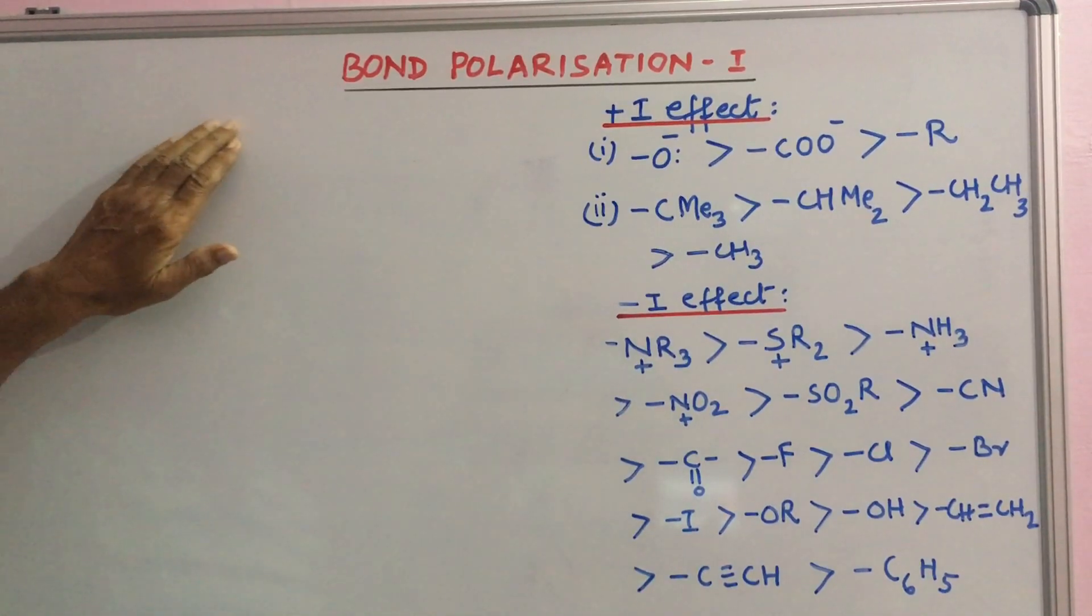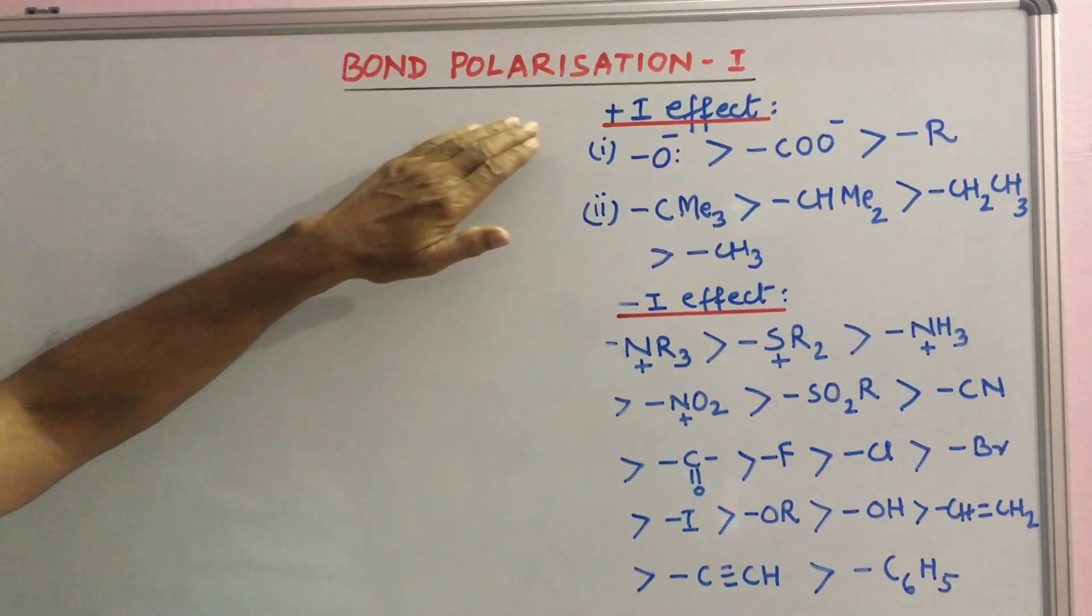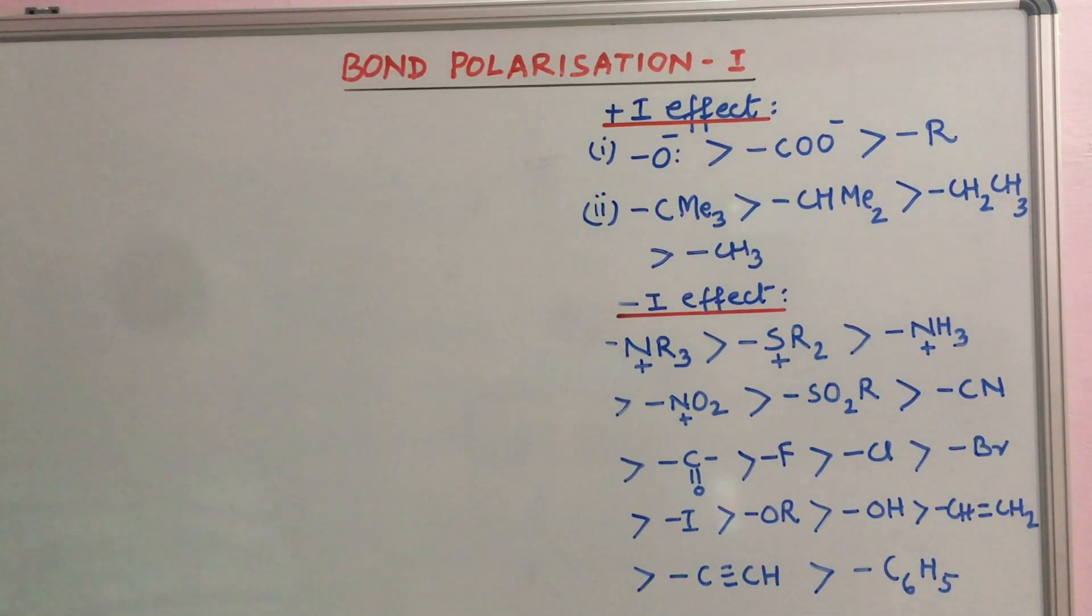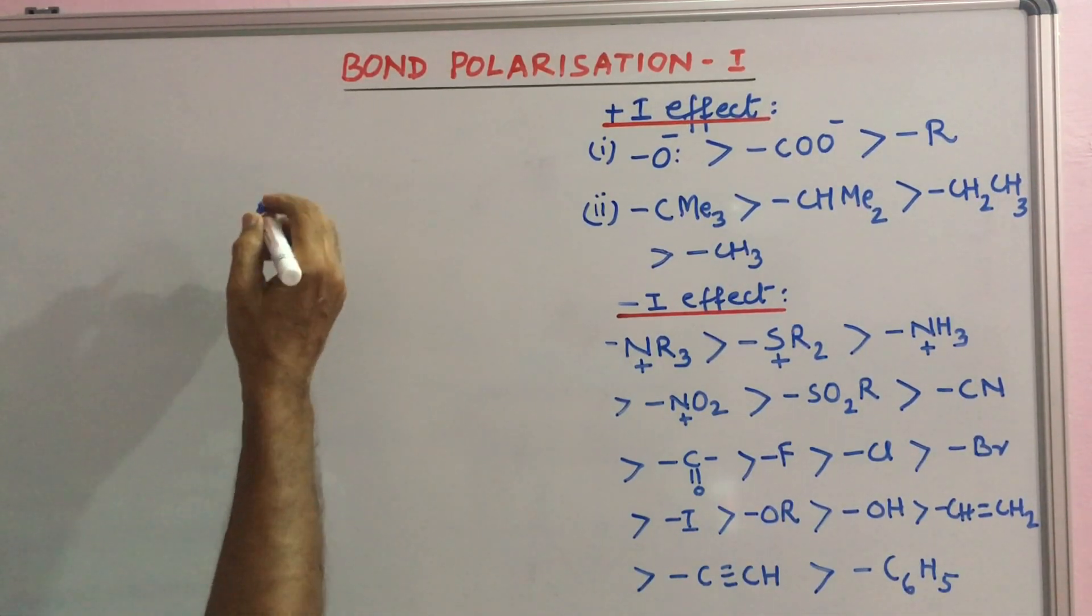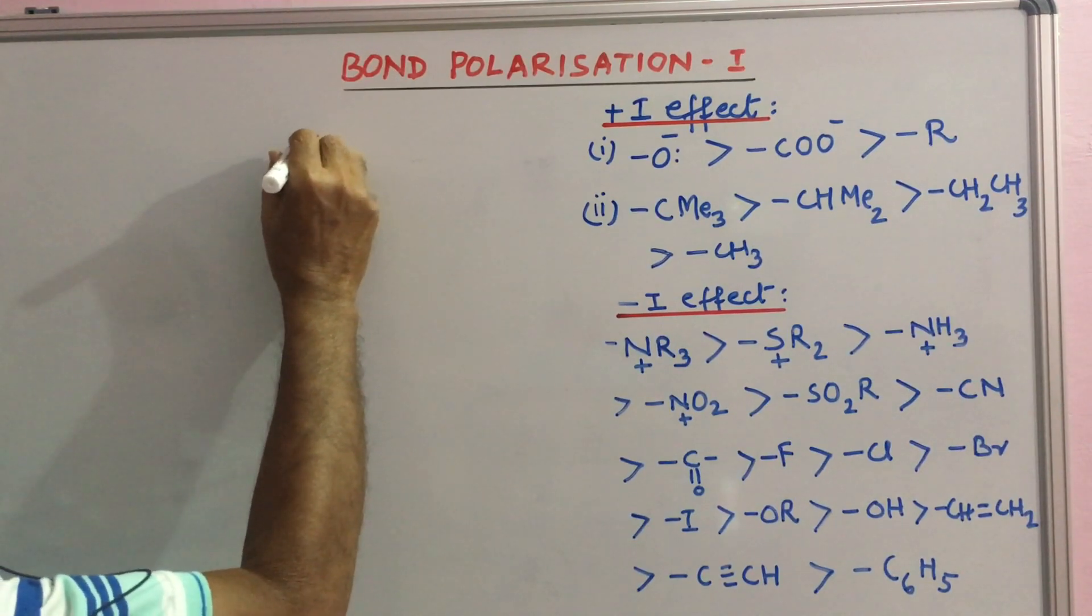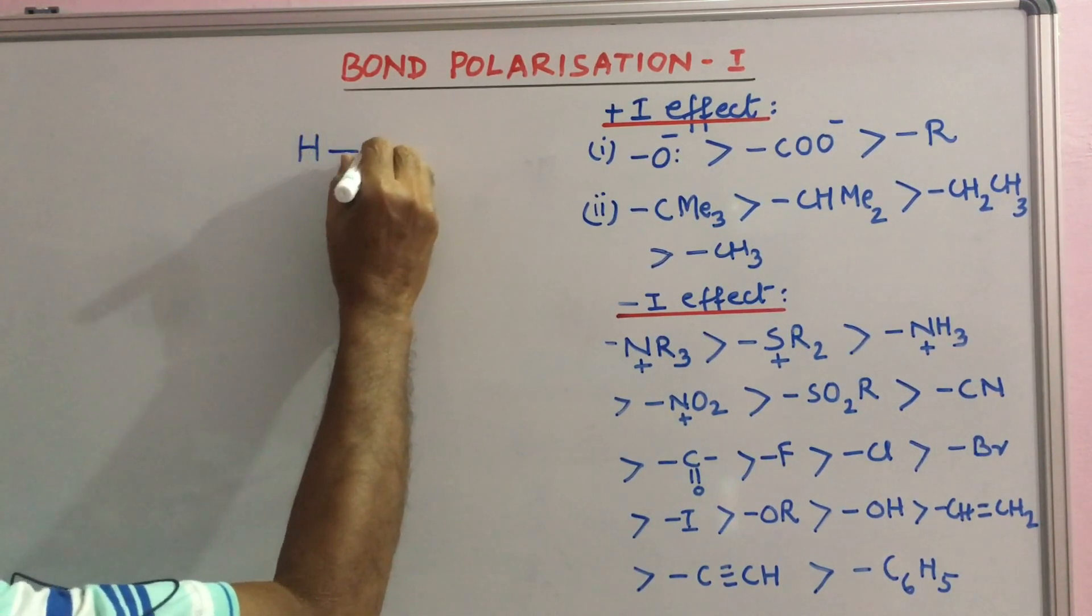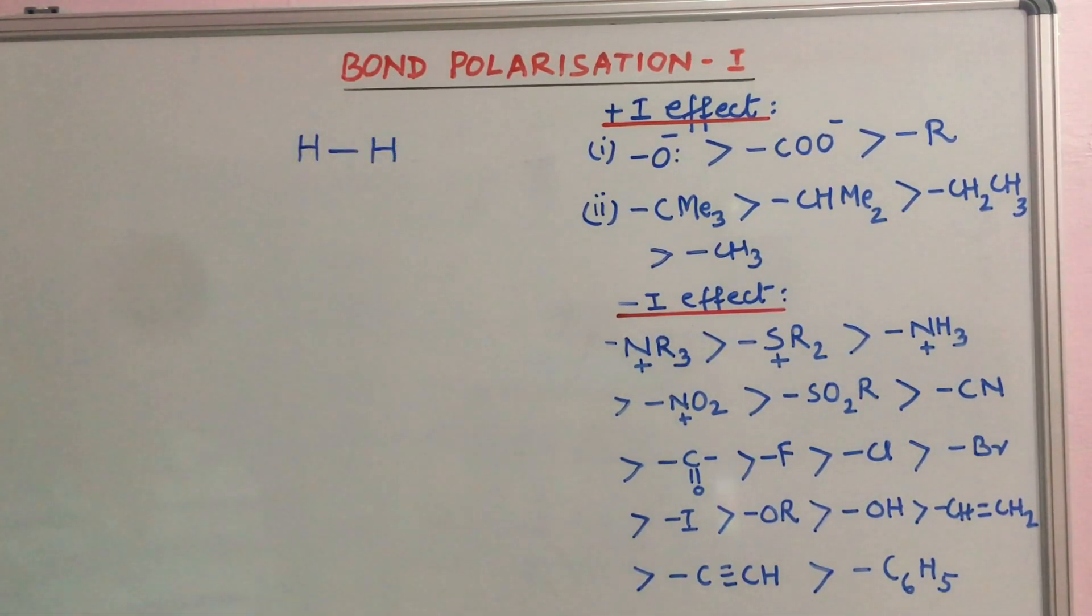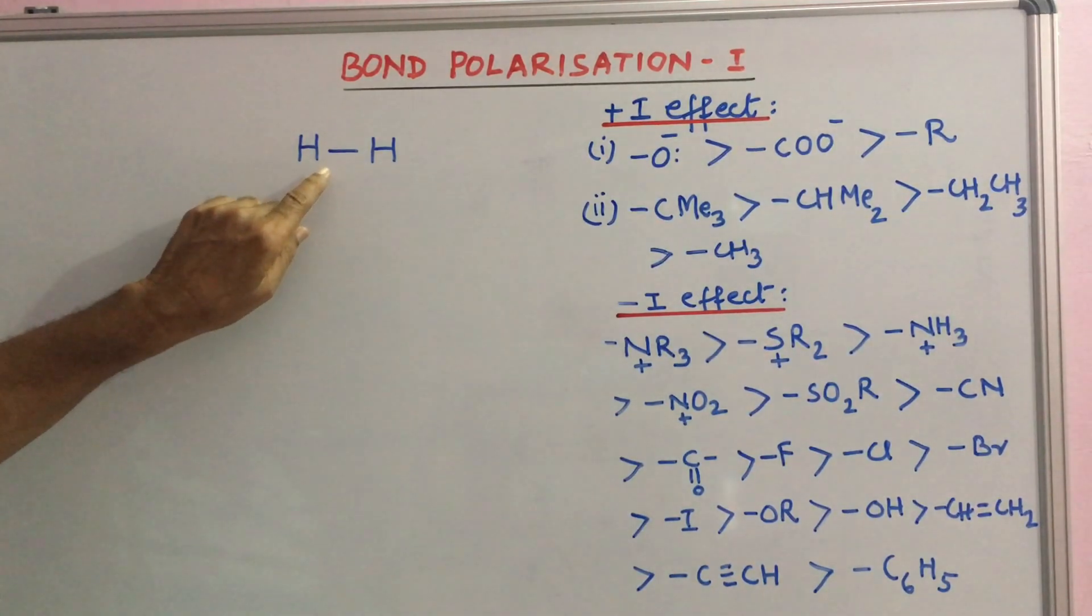Today, I will describe bond polarization. If a bond is shared by two similar atoms, say hydrogen atoms, the projection of electron density is equal by these two atoms and there is no polarization.